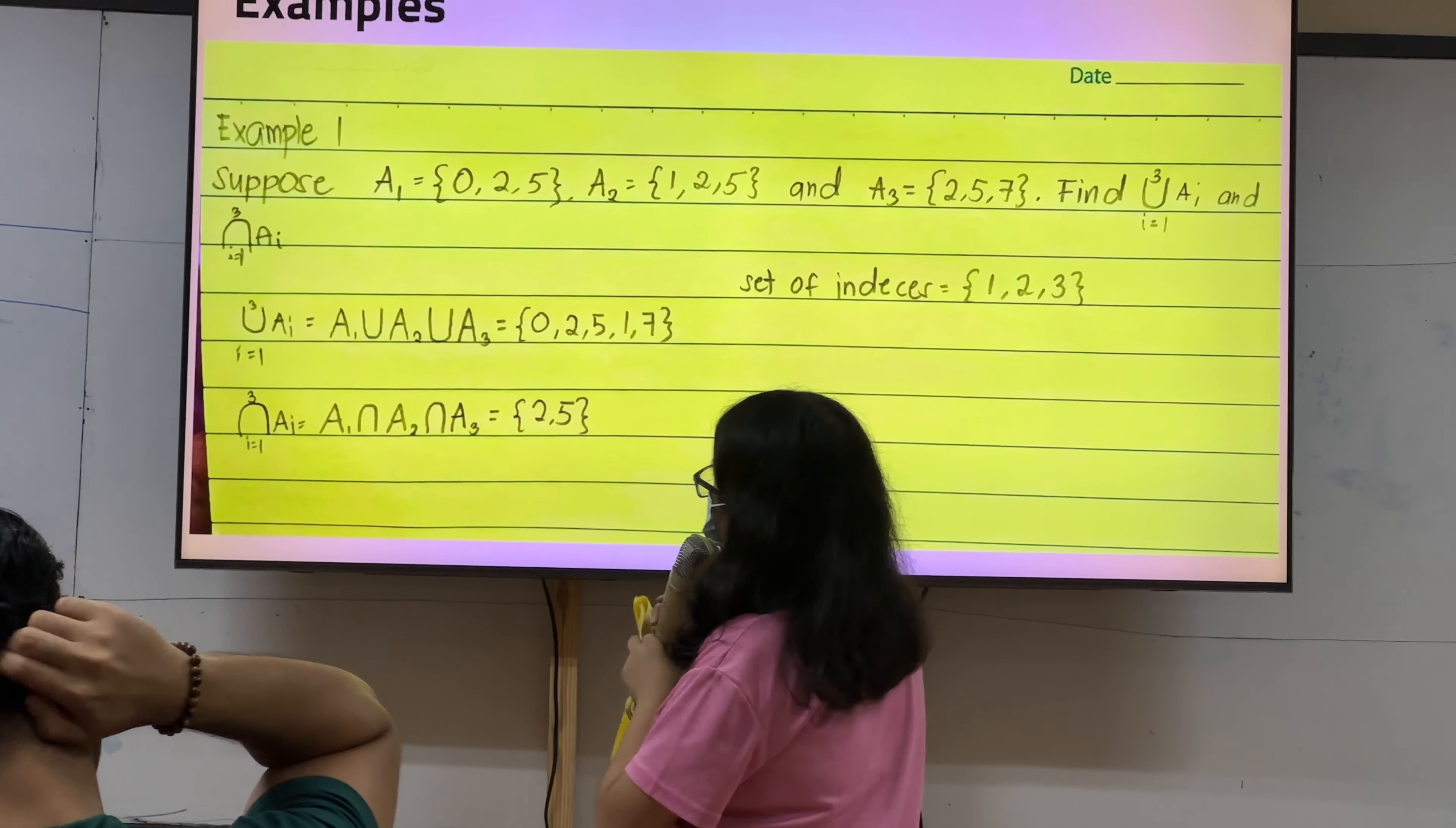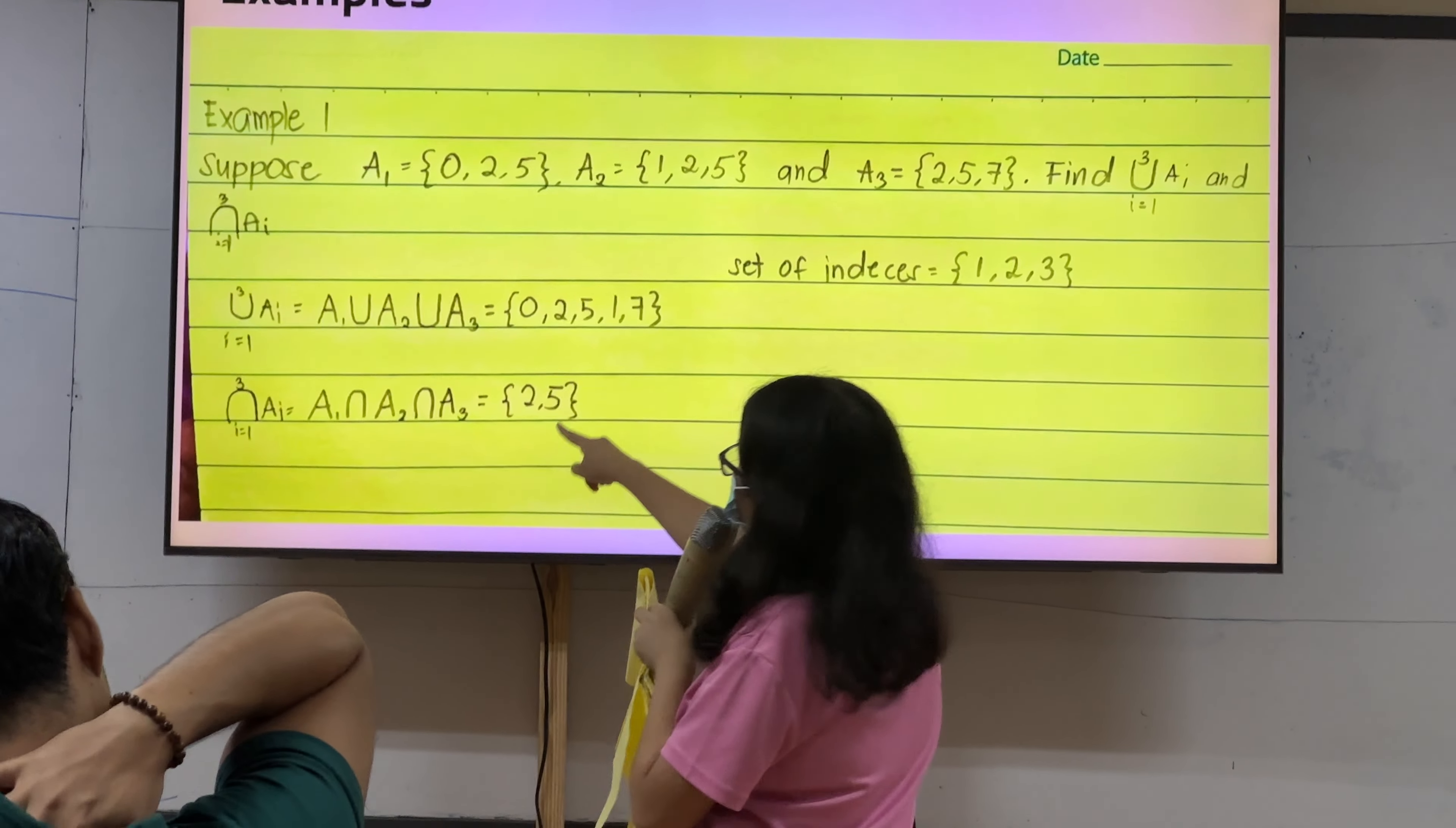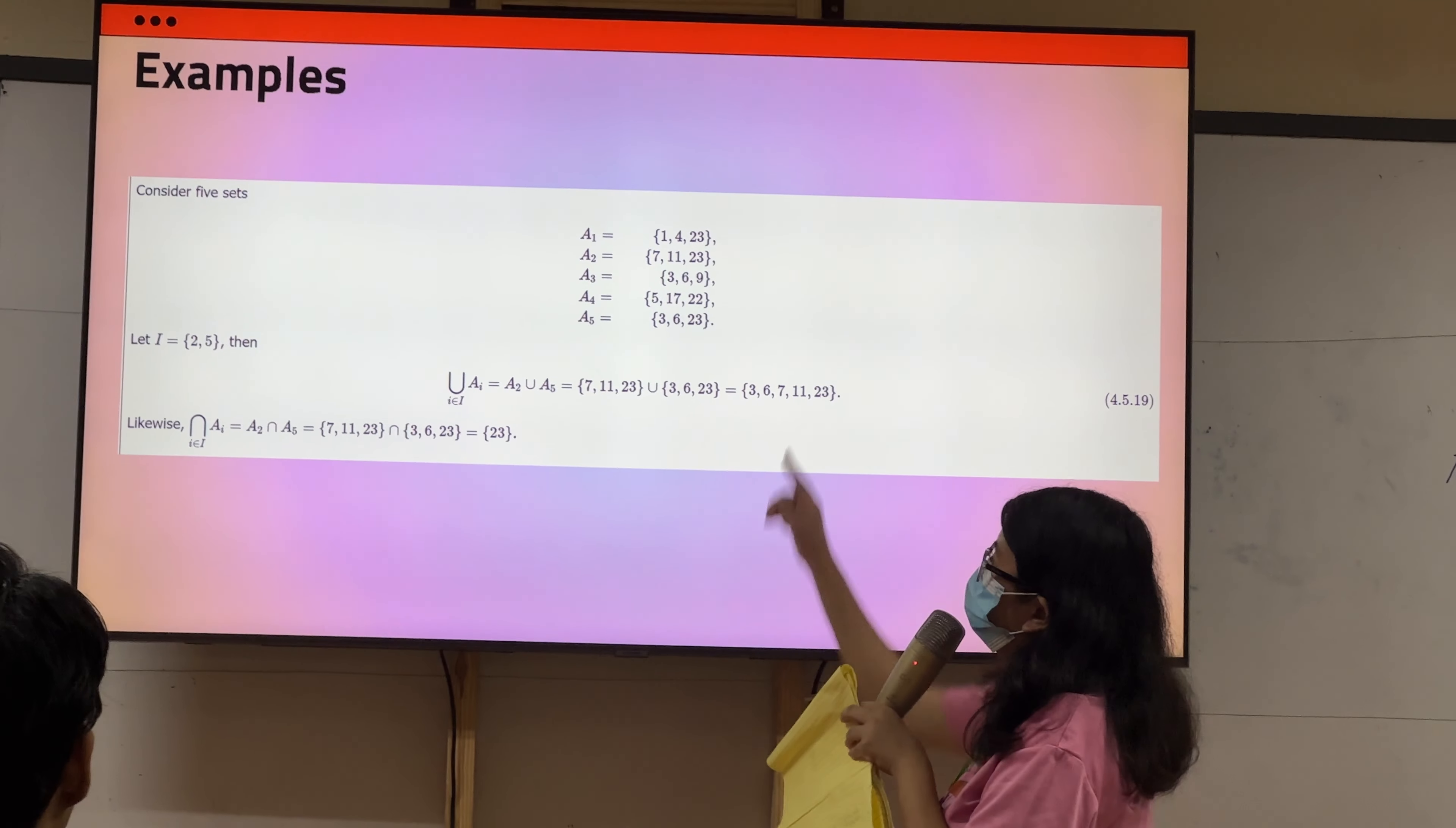Nasa intersection, ito niya, makita niya mo, kanin, kung pinanang-assign, to find the intersection, I equals 1 to 3 of AI, kay, ato lang ipangita, ag mga, similar na mga, same nila nga elements. Since, dikans sa 1, 2, and 3, ag same nila nga element, kay 2, and 5, maun niya, ang intersection, sa 3 sets, 2, and 5.